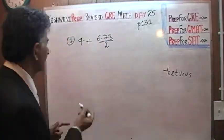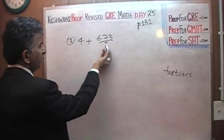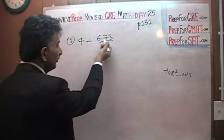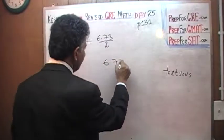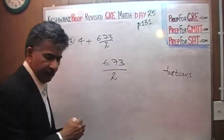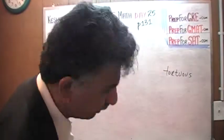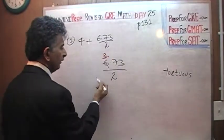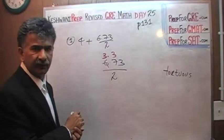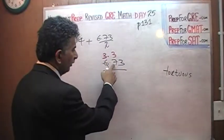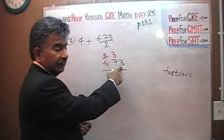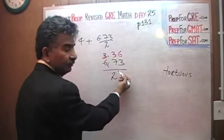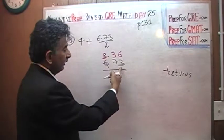For example, the very first problem they give you is 4 plus 6.37 over 2. Instead of trying to do it all at once in the calculator, do it manually yourself. 6.73 divided by 2 cannot possibly be that complicated. How many 2s in a 6? There are 3. How many 2s in a 7? There are 3, with remainder 1.